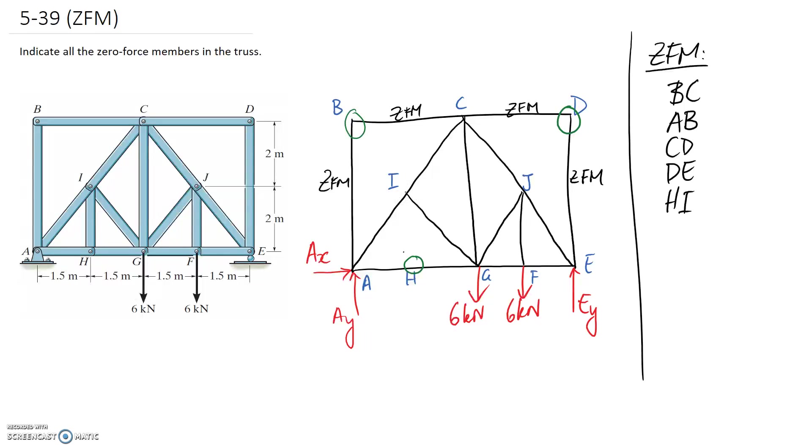And again, two of them are in a straight line. And this third one is subsequently going to be a zero force member. Okay. So we can add that one to the list as well. So GI is also going to be zero force.